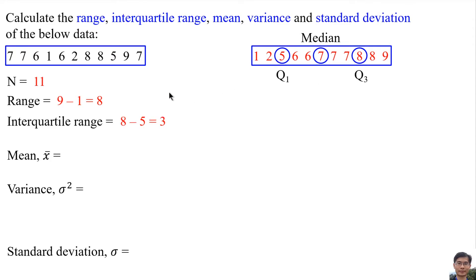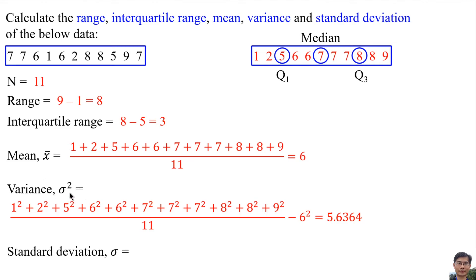Mean is the average of the data, so mean is 6. For variance, we square all of the numbers, add them, then subtract the mean squared, and we get 5.6364.